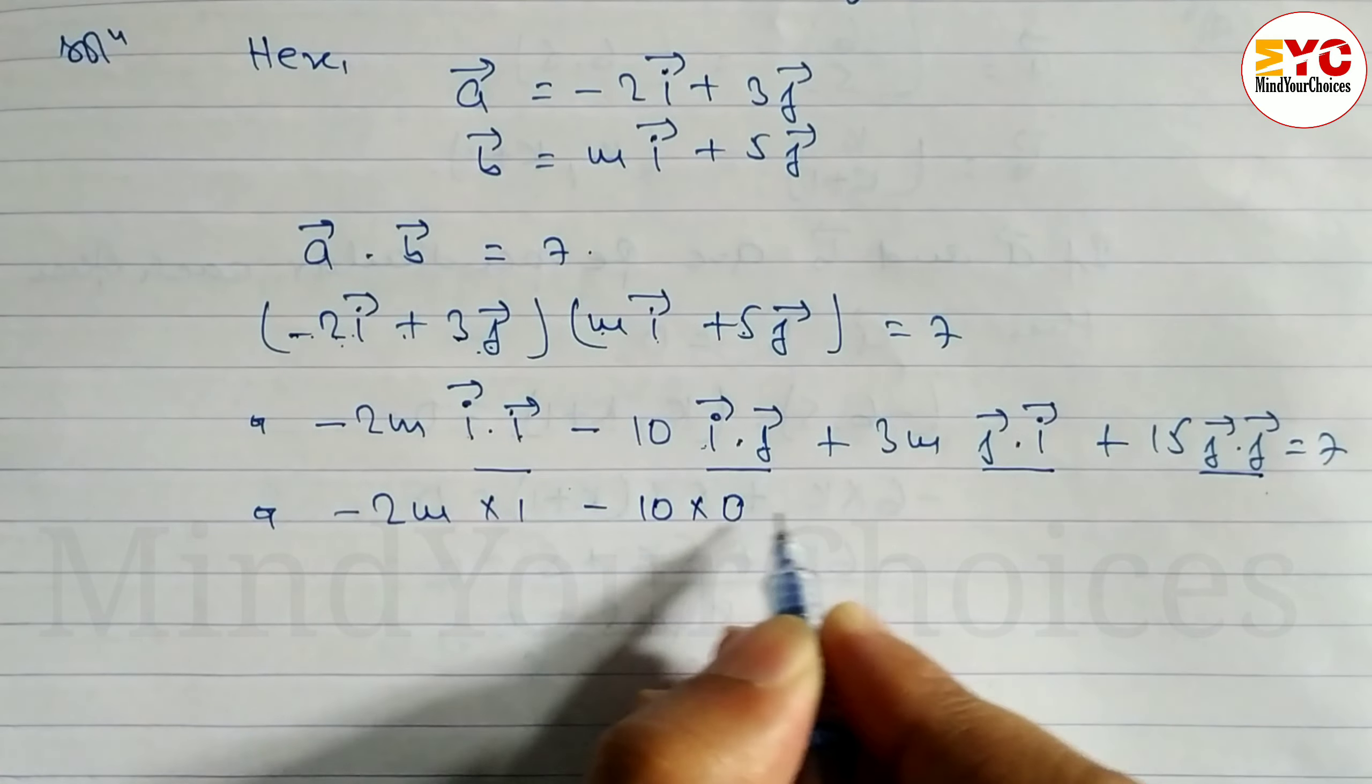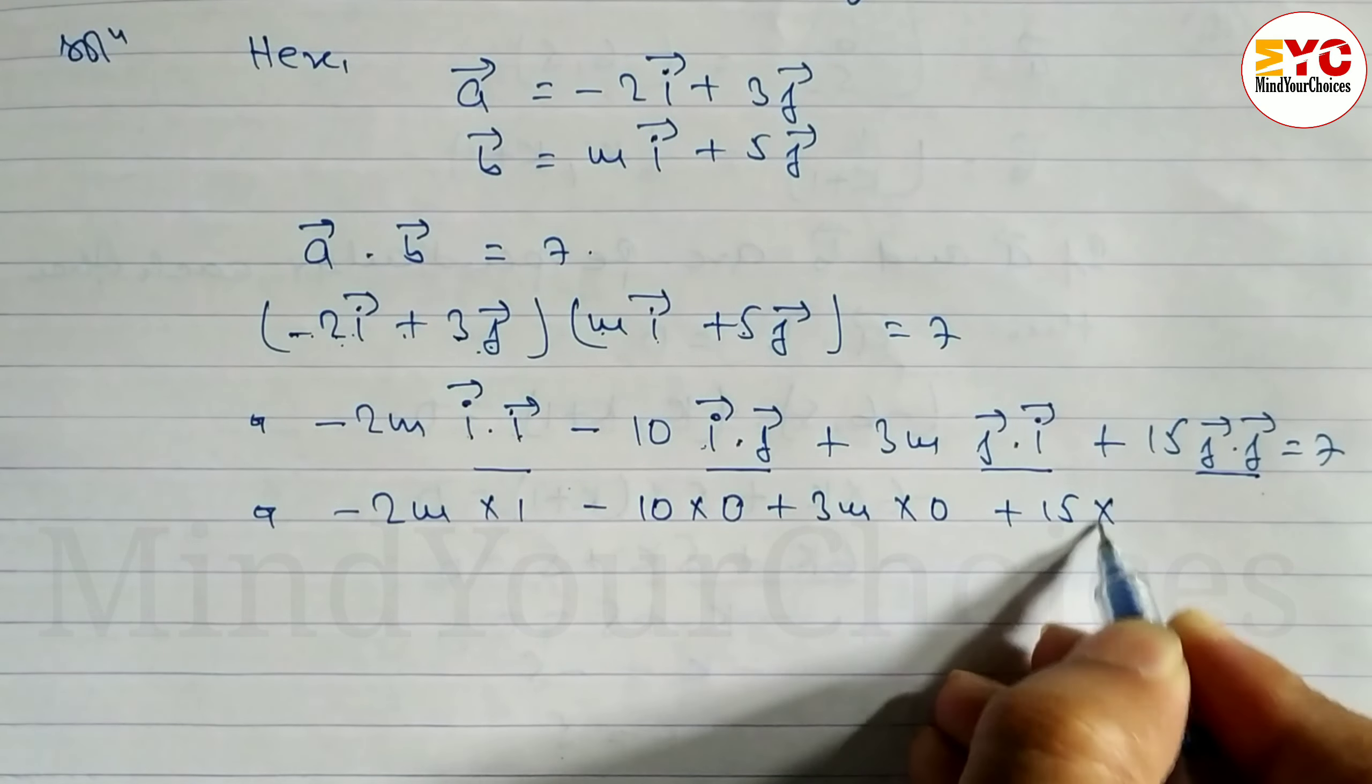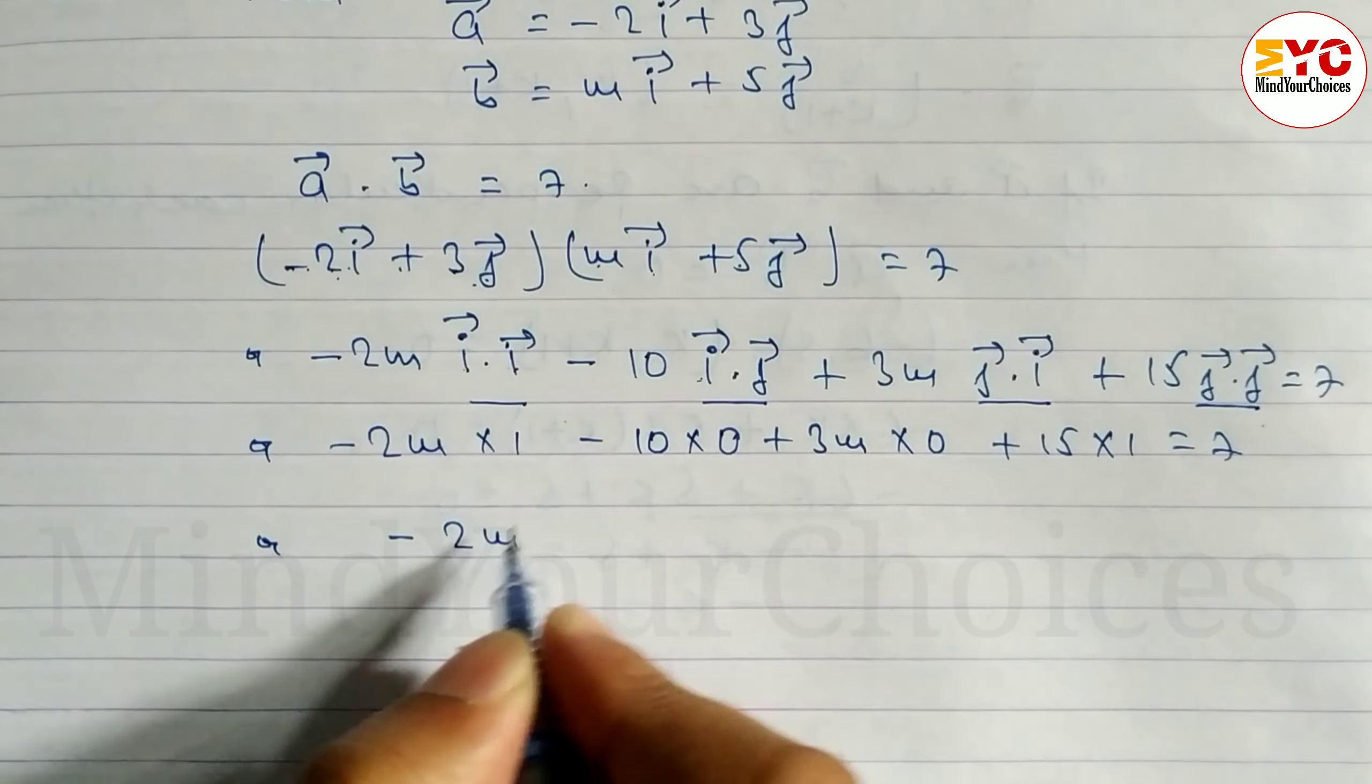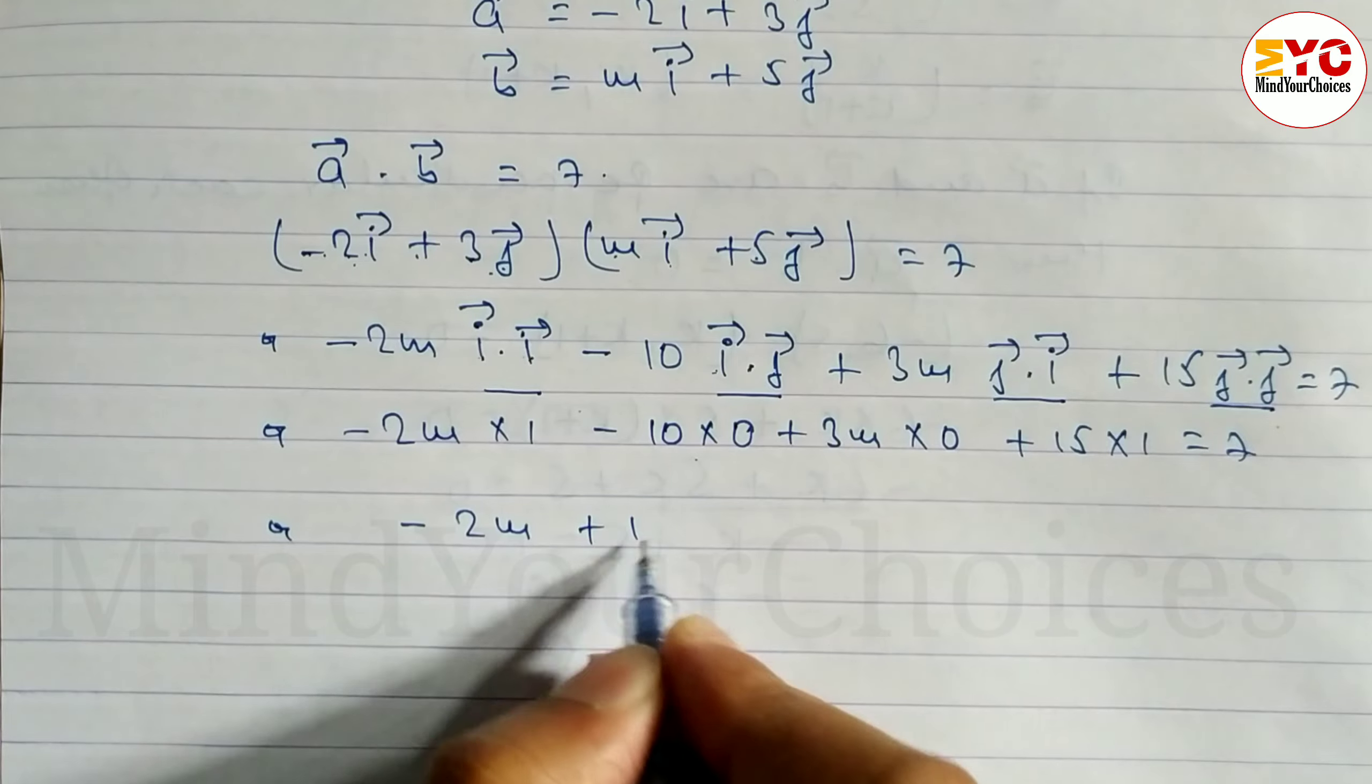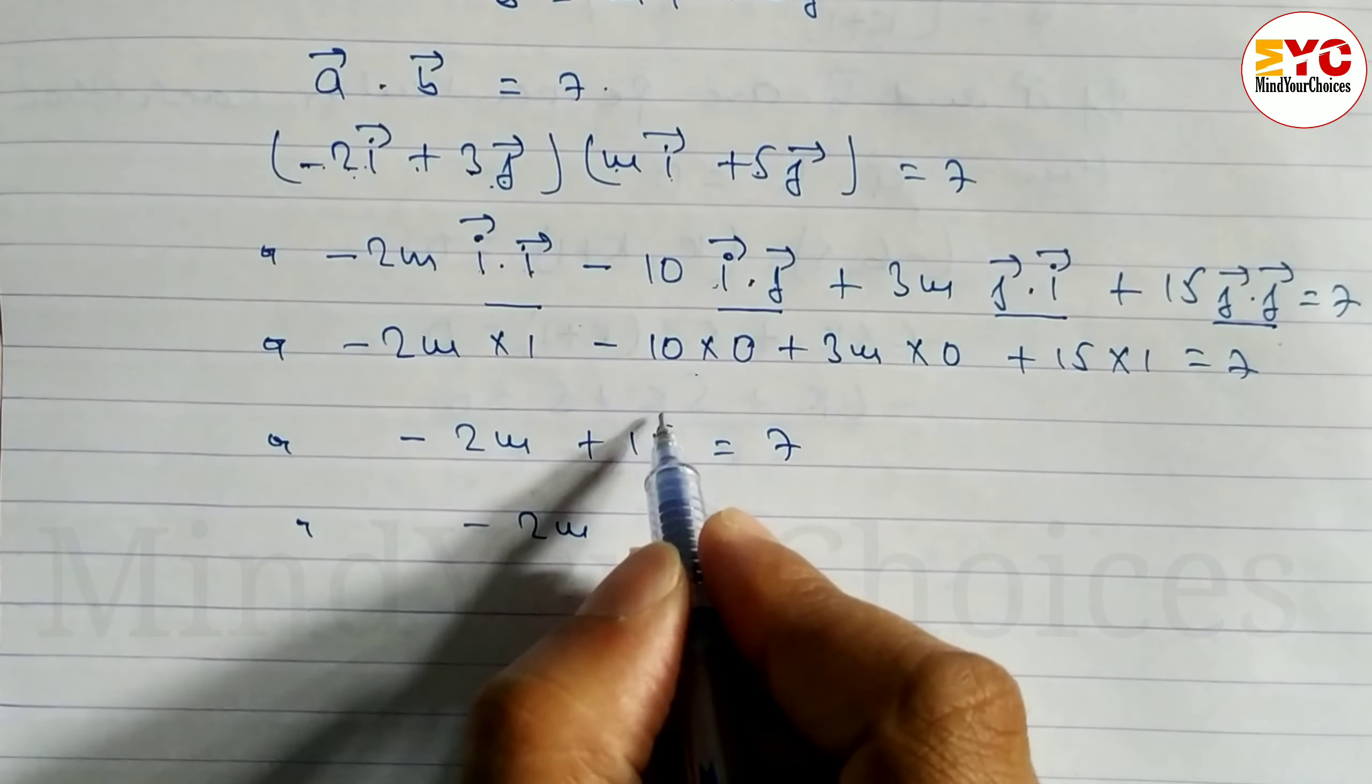This simplifies to: -2m + 15 = 7. Moving 15 to the right side gives us: -2m = 7 - 15.